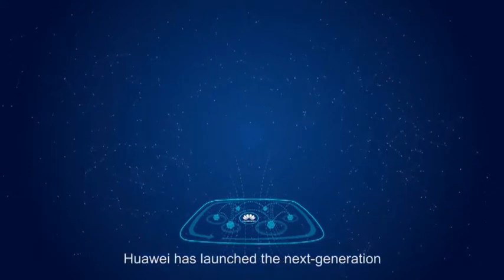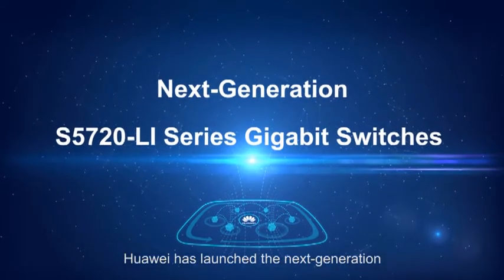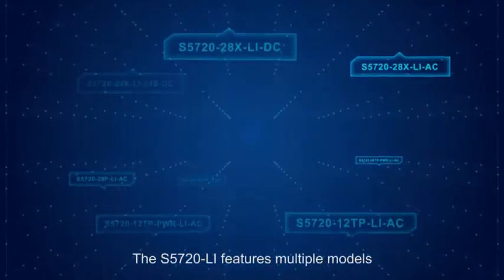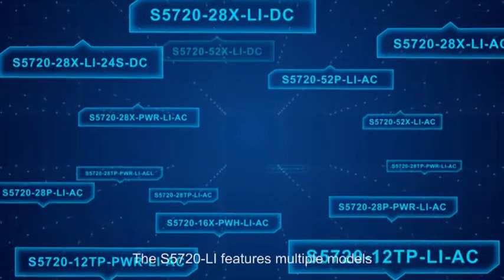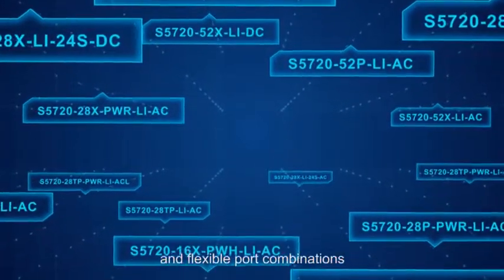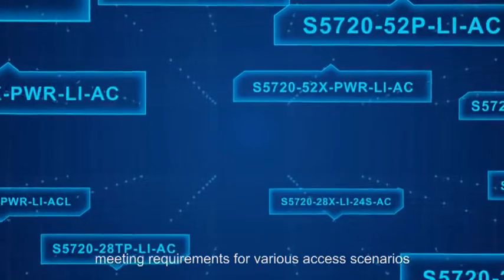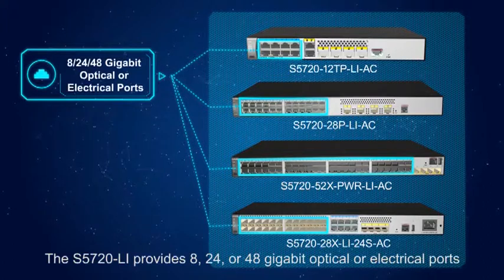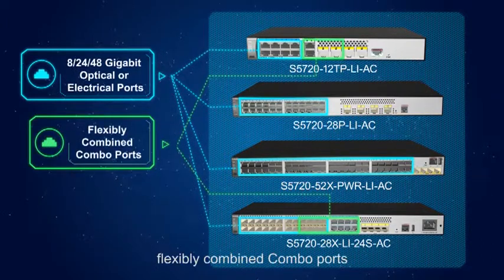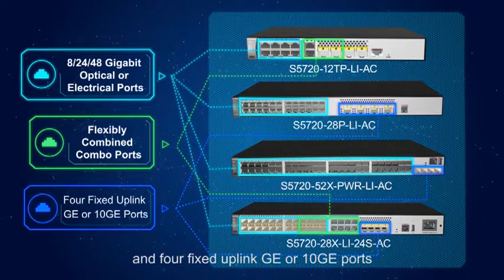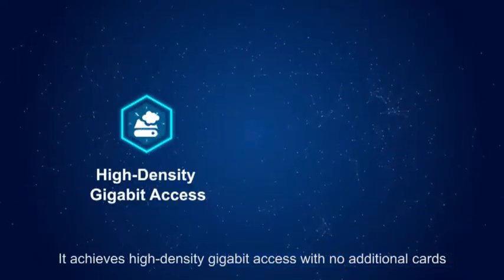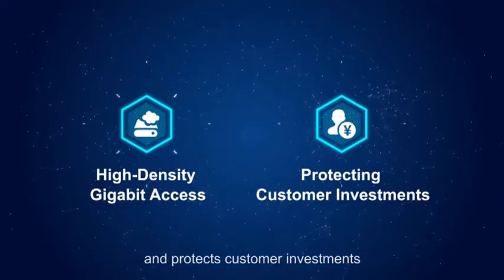To meet these requirements, Huawei has launched the next generation S5720 Li series gigabit switches. The S5720 Li features multiple models and flexible port combinations, meeting requirements for various access scenarios. It provides 8, 24, or 48 gigabit optical or electrical ports, flexibly combined combo ports, and 4 fixed uplink GE or 10 GE ports. It achieves high density gigabit access with no additional cards and protects customer investments.